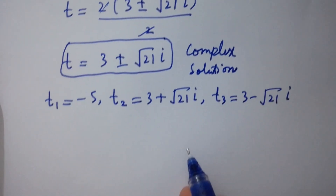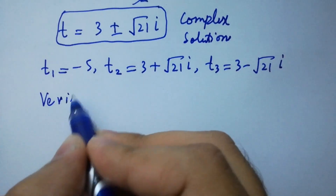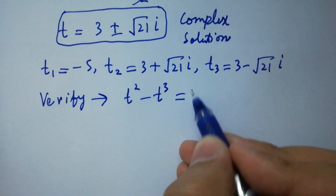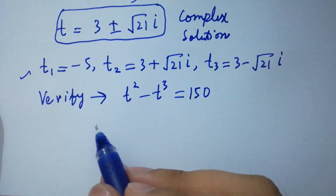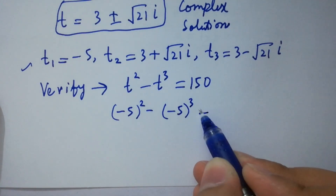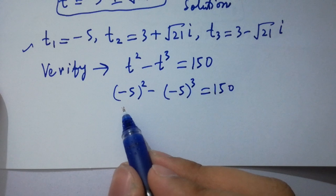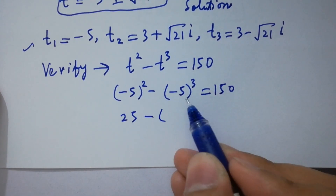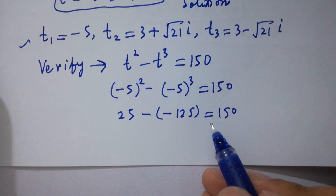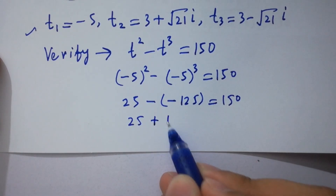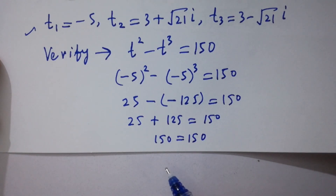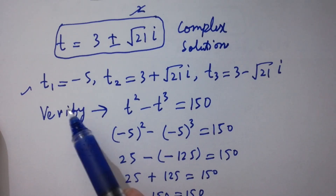So we have three values: t1 equals minus 5, t2 equals 3 plus root 21 i, and t3 equals 3 minus root 21 i. Verifying with t1: putting t equals minus 5, we get minus 5 squared minus minus 5 cubed equals 25 plus 125 equals 150, so left-hand side equals right-hand side, confirming our solutions satisfy t squared minus t cubed equals 150.